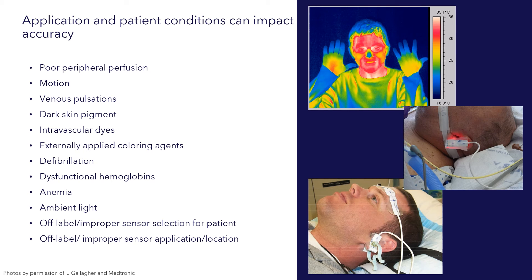Venous pulsation, while normally not occurring, can occur in situations such as tricuspid regurgitation, patients that are on continuous renal replacement therapy, and even if a sensor is taped too tight, where venous pulsation can occur and confound the arterial pulsation, creating an artificially low oxygen saturation reading.